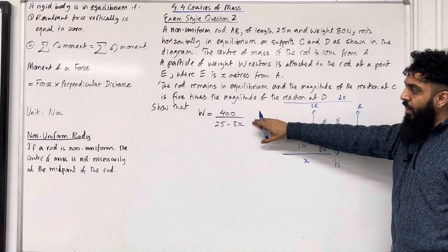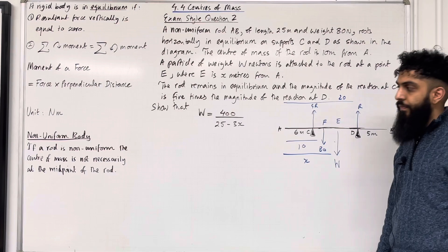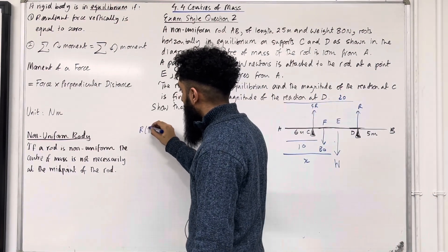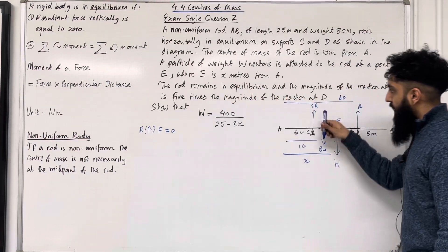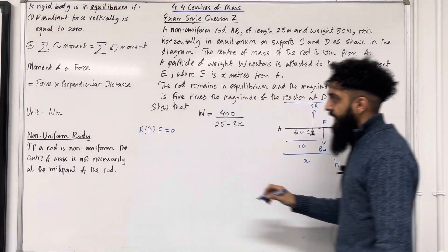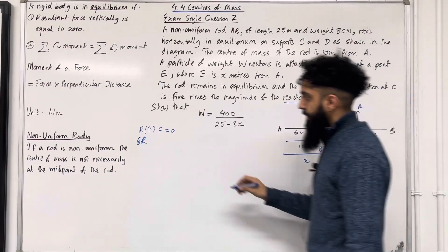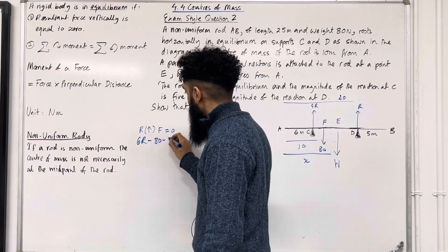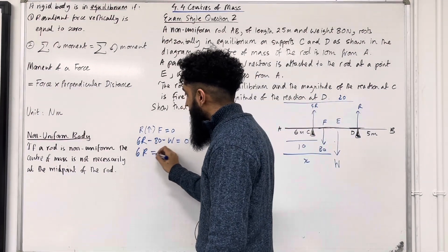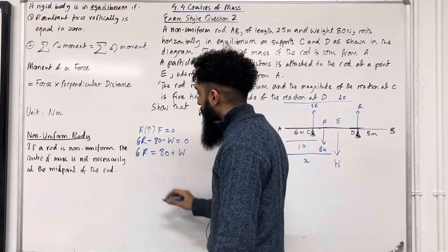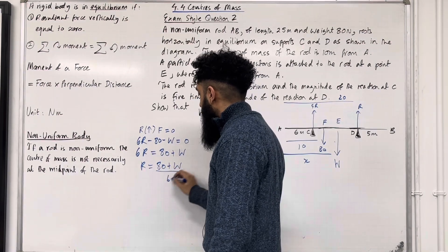I want to show that W equals this fraction. Firstly I'm going to use condition 1 of equilibrium — resolve vertically, resultant force equals zero. So we have 5R plus R minus 80 minus W equals 0, giving 6R equals 80 plus W, hence R equals (80 plus W) divided by 6. This is equation 1.